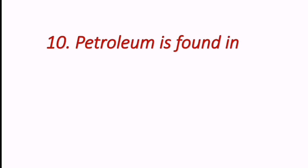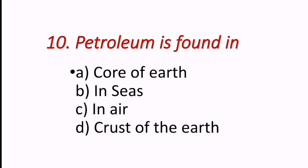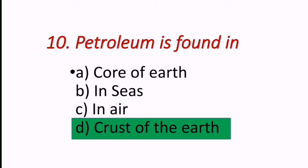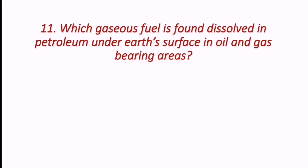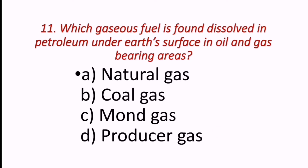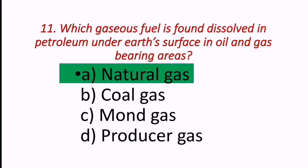Next question: petroleum is found in which part of the earth? Petroleum is found in the crust of the earth. Next question: which gaseous fuel is found dissolved in petroleum under the earth's surface? The options are natural gas, coal gas, producer gas, and blast furnace gas. The correct answer is natural gas.